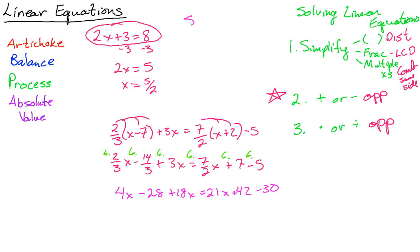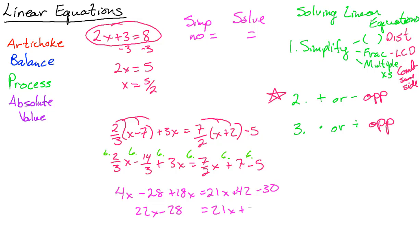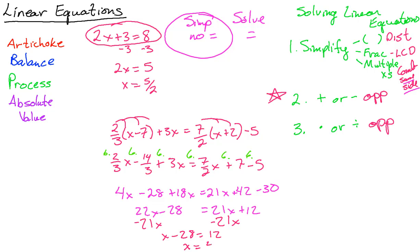Note that in algebra there are simplify problems — no equal sign — and solve problems, which have an equal sign. This overall problem is a solve problem. Combining on each side gives 22x − 28 = 21x + 12. Getting variables on one side, we get x − 28 = 12, then add 28 and x = 40.